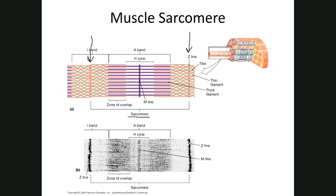In your notes, the A-band (anisotropic band) is your dark band — it extends the entire length of the myosin myofilament and is where thick and thin myofilaments overlap. The myosin are the purple (thick) filaments and the actin are the thin red ones. The overlap makes it denser, producing the dark line of the striation.